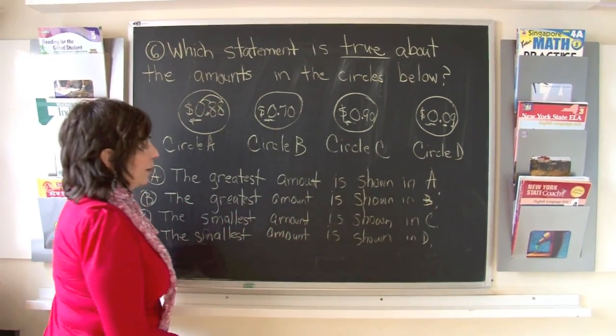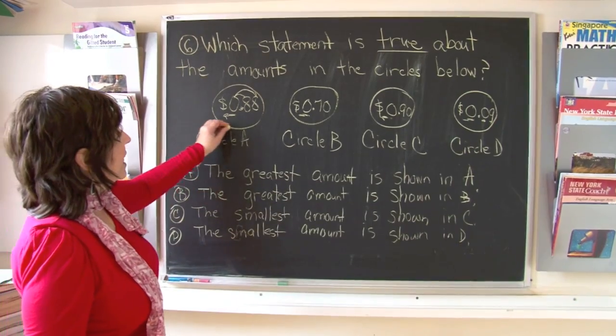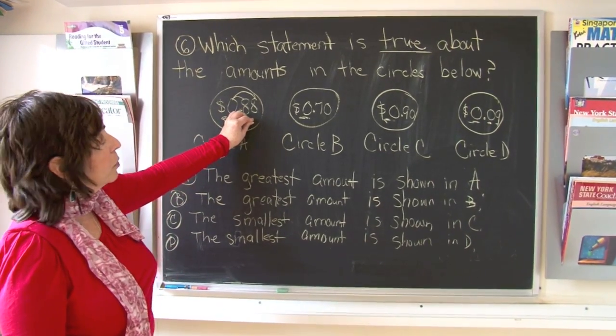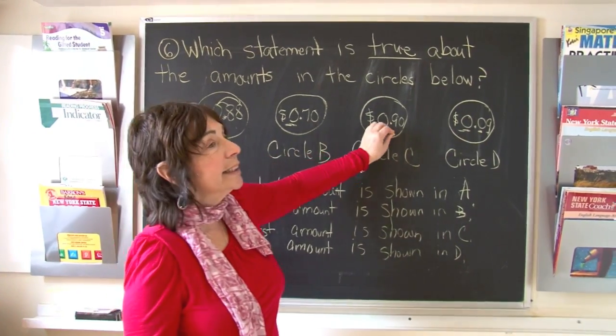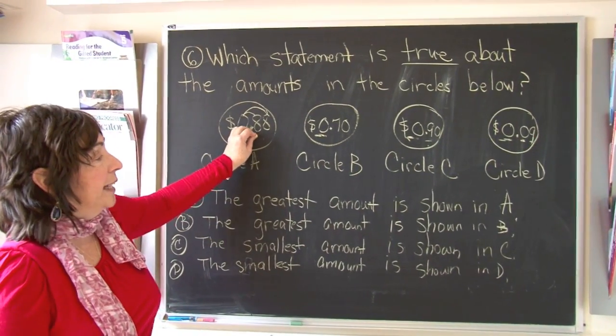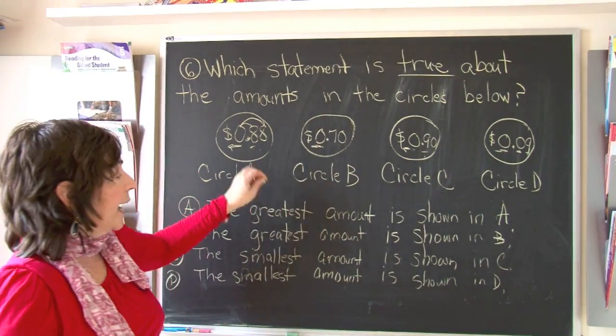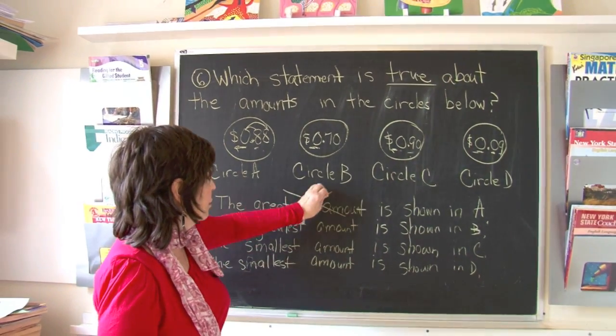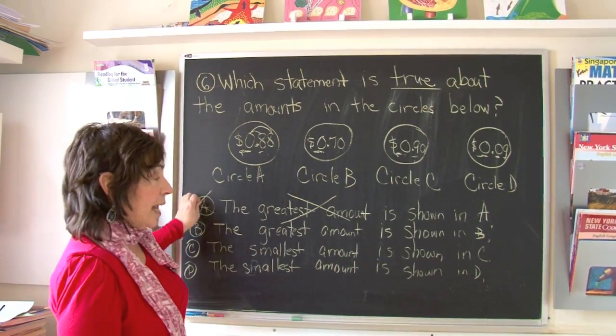A says the greatest amount is shown in A. Well, A is eighty-eight cents, and right away I can tell you that ninety cents, nine tenths is greater than anything with eight tenths. Ninety cents is greater than eighty-eight cents, so that could not be correct. A is not right.